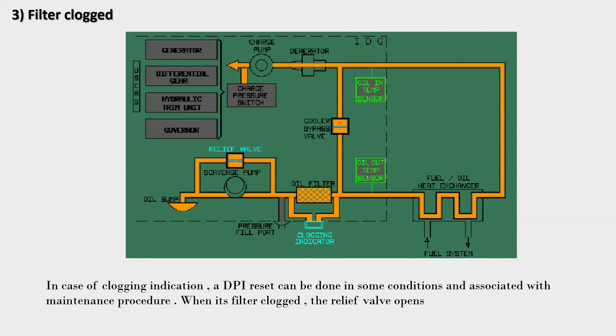When the oil filter gets clogged, it's like a roadblock preventing smooth oil flow. The DPI senses this increase in pressure caused by the clog and pops up. It's like a traffic sign popping up to warn drivers of danger. This visual signal is easy to spot even from a distance, so operators can quickly take action. Think of it as your car's warning light but for the IDG. It's a simple yet effective way to ensure that any issues with the oil filter are detected promptly, helping to keep the IDG running smoothly and avoiding potential damage.